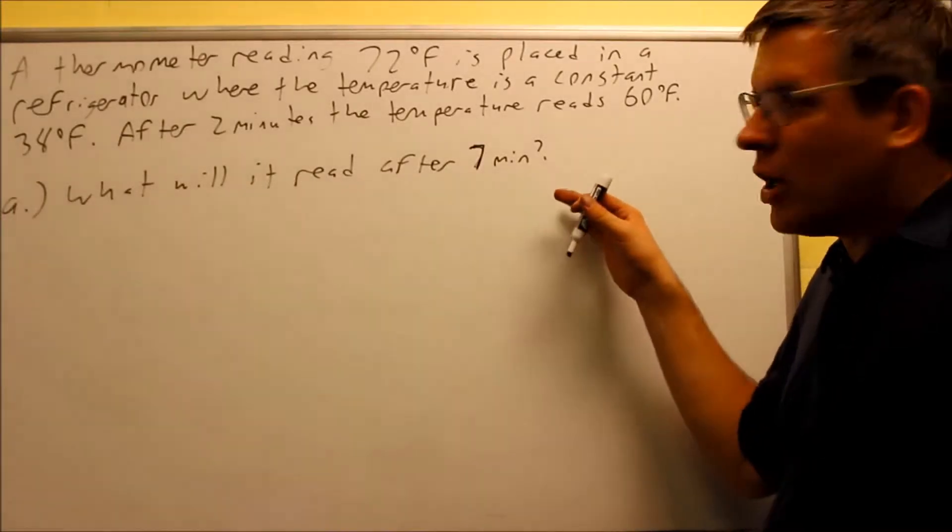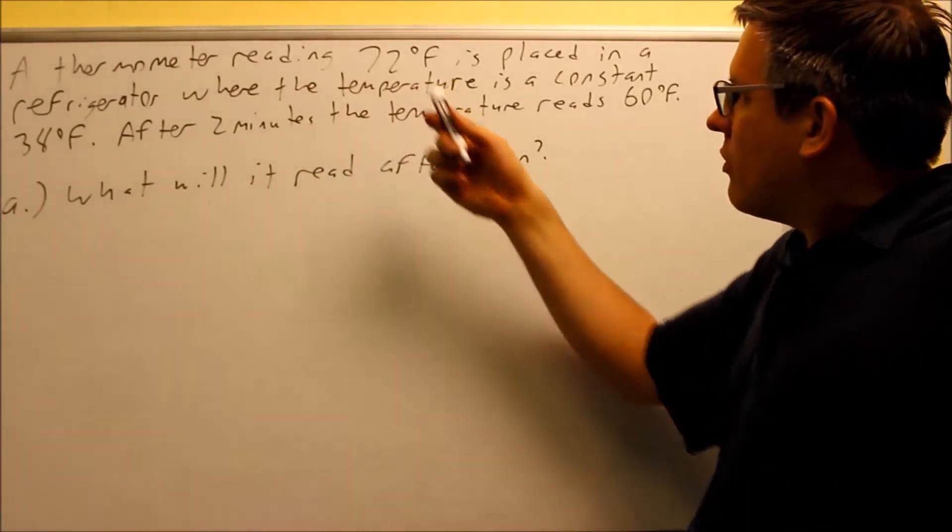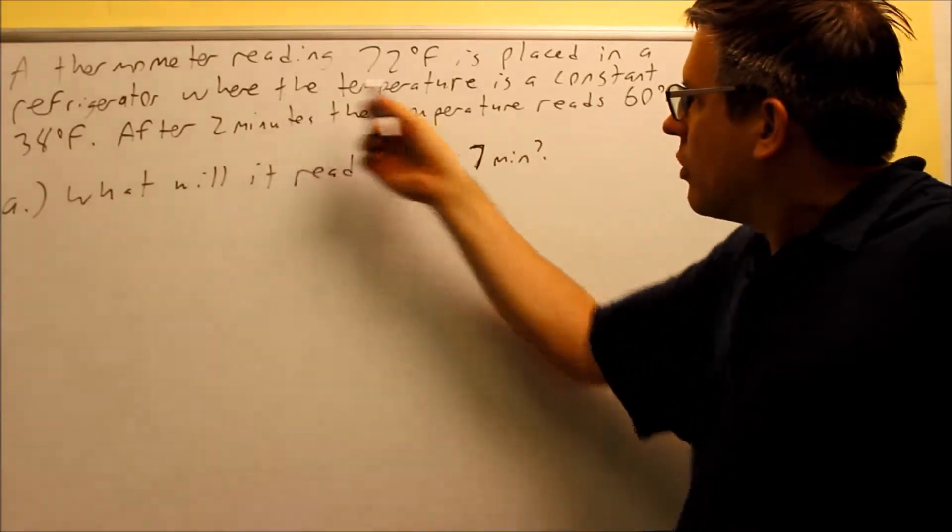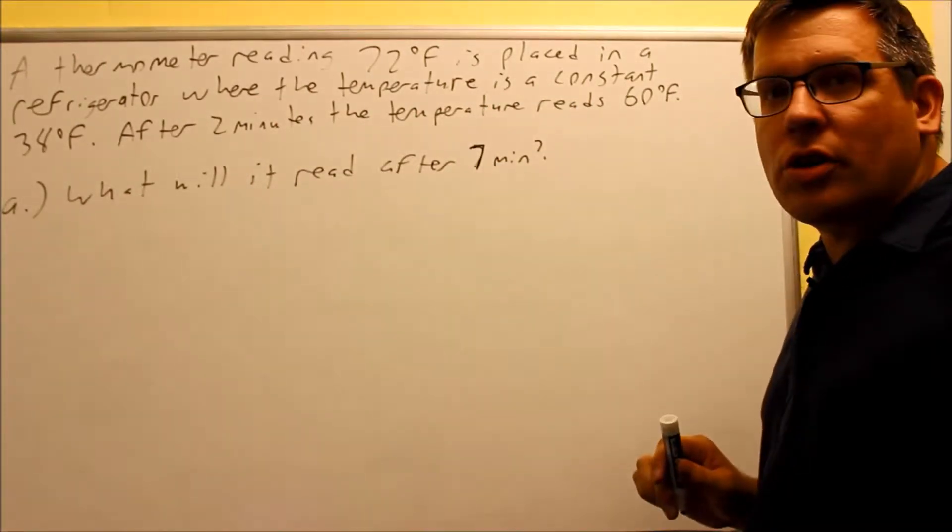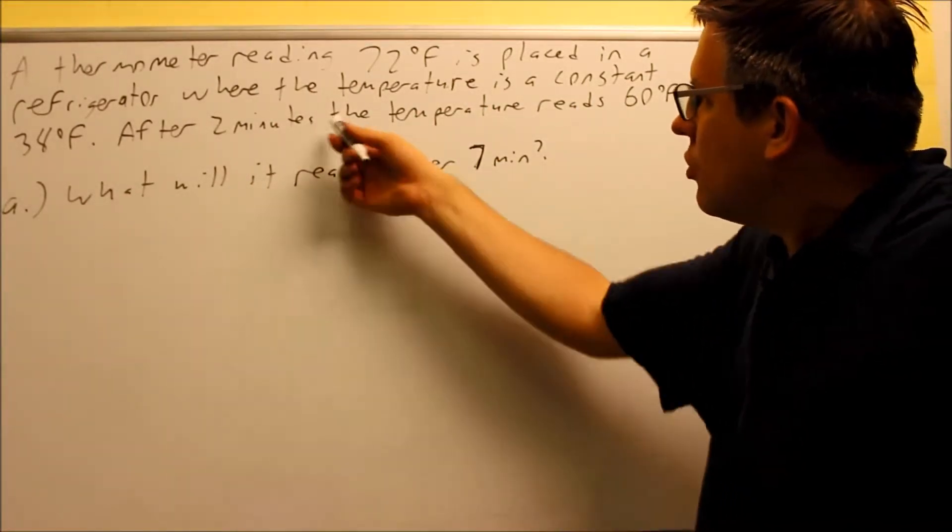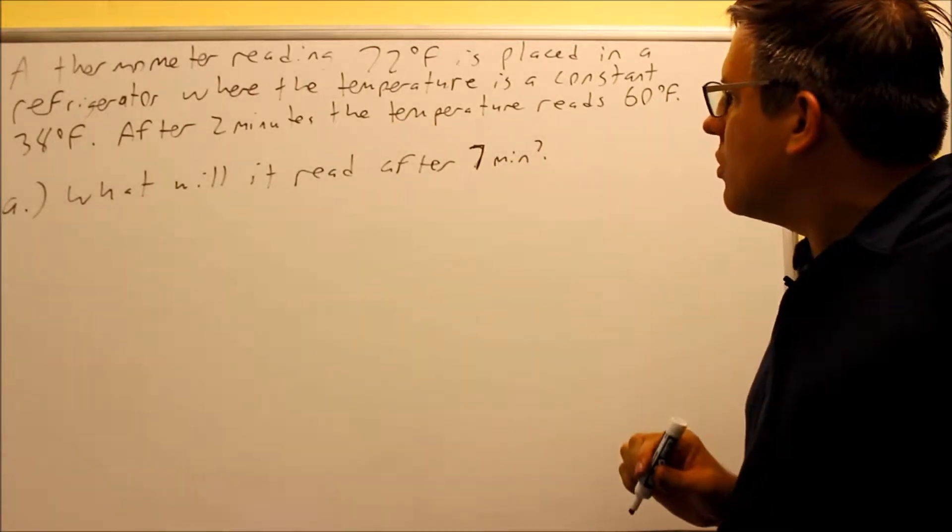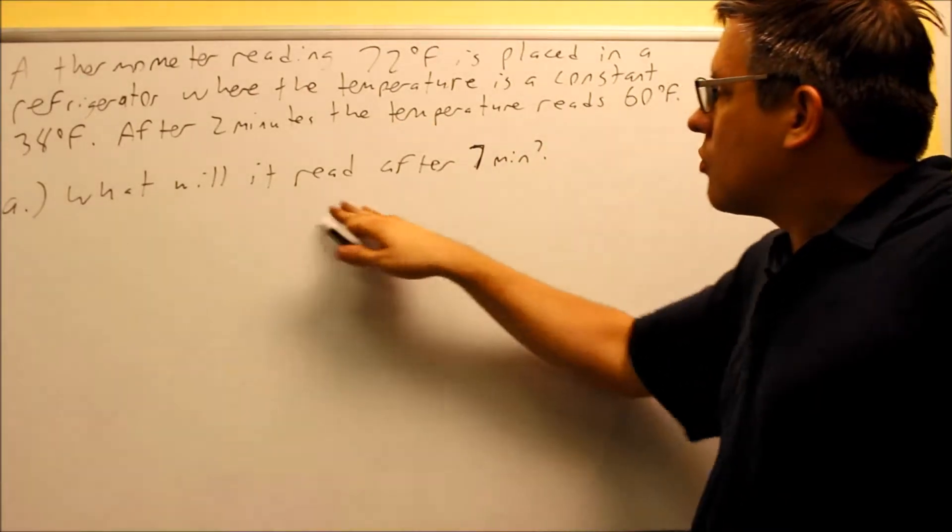We have another Newton's Law of Cooling problem. A thermometer reads 72 degrees. It's placed in the refrigerator where the temperature is a constant 38 degrees Fahrenheit. After two minutes, the temperature reads 60 degrees.